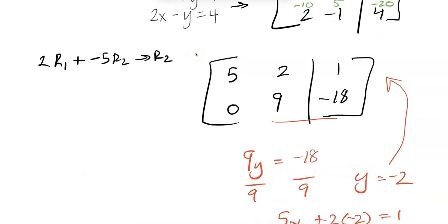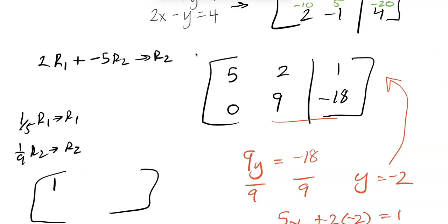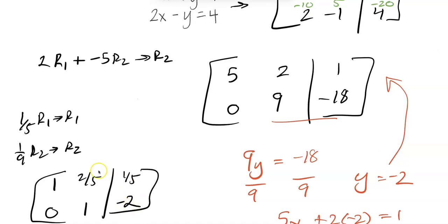For a more proper row echelon form, you could multiply row 1 by one-fifth and row 2 by one-ninth. That gives you 1, two-fifths, | one-fifth and 0, 1, | negative 2. From the second row you immediately know y = negative 2, then plug in to find x. Either way works — it's just preference.